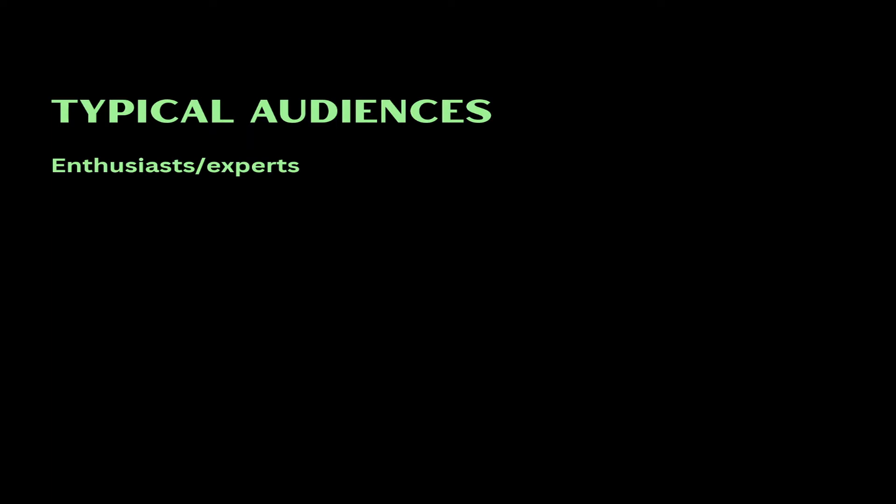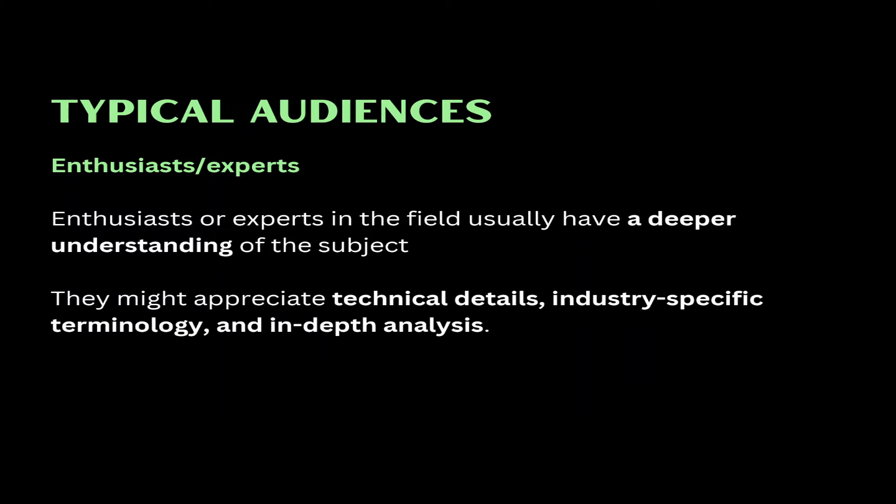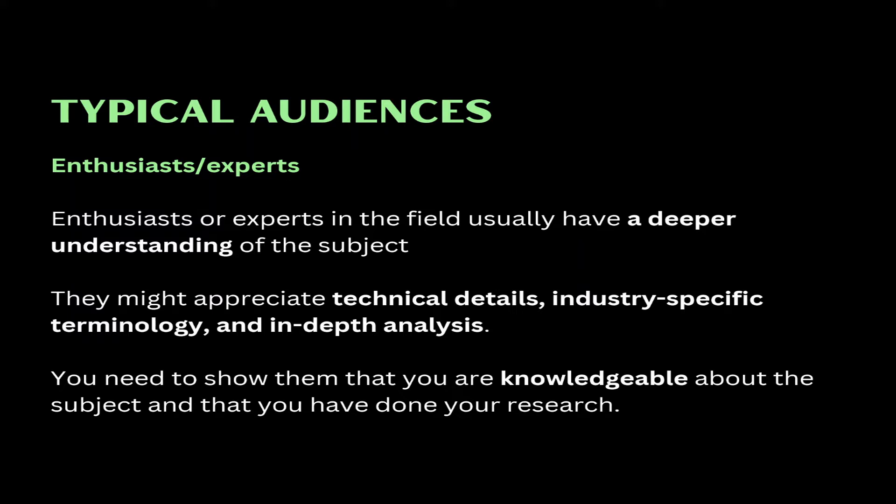Occasionally, the exam question may state that your review will be published in a specialized magazine or journal. This means you're writing for an audience of enthusiasts or experts in the subject. Let's say the task asks you to write a review of a new car in a sports car magazine. The people you are writing for are car enthusiasts or experts who probably know a lot about the car industry. To suit the needs of this type of audience, you will need to offer them technical details, industry-specific terminology and in-depth analysis. You need to show them that you are knowledgeable about the subject and that you have done your research.